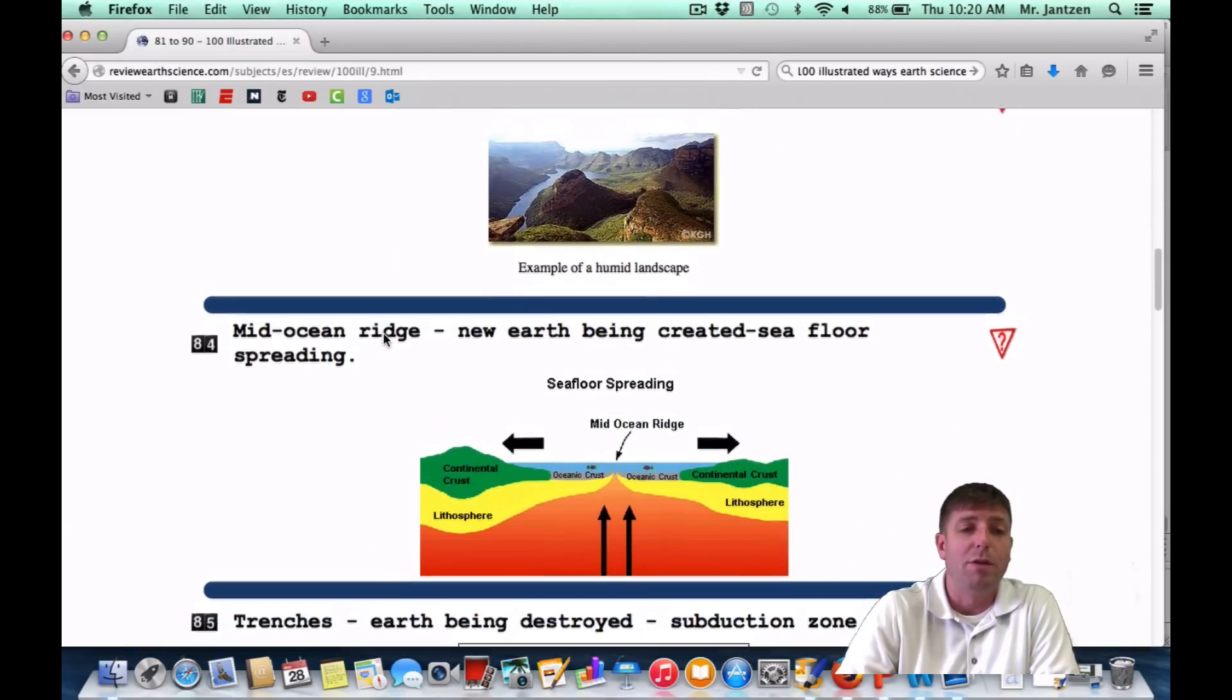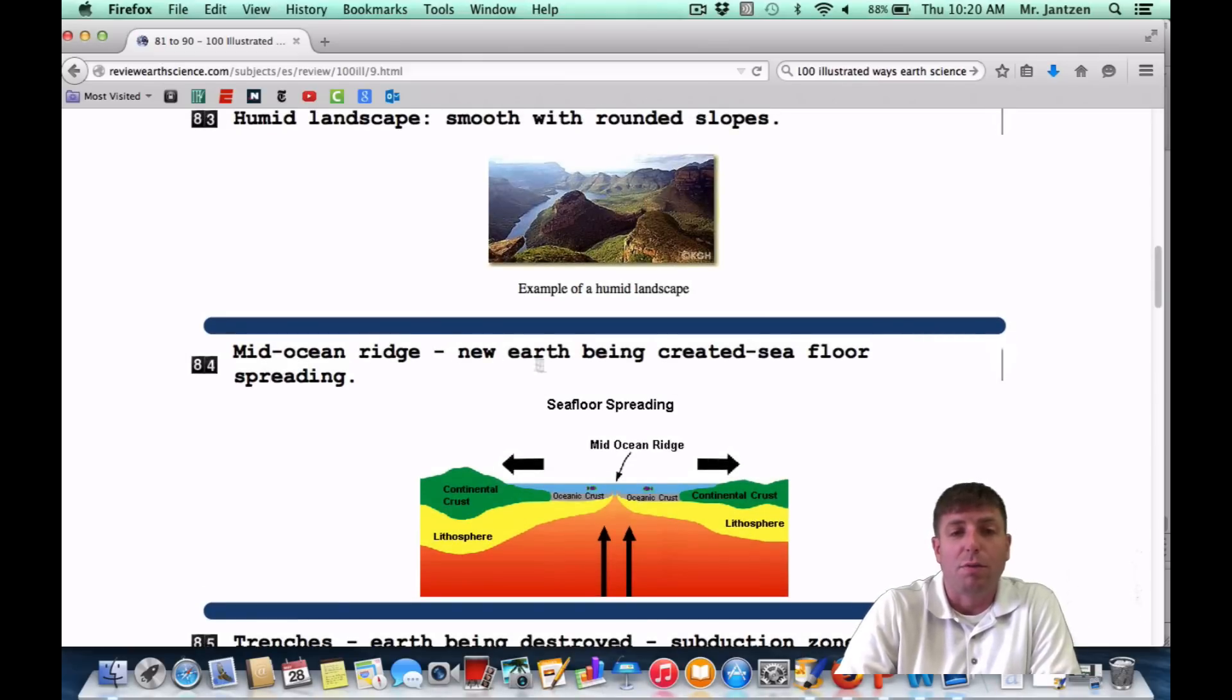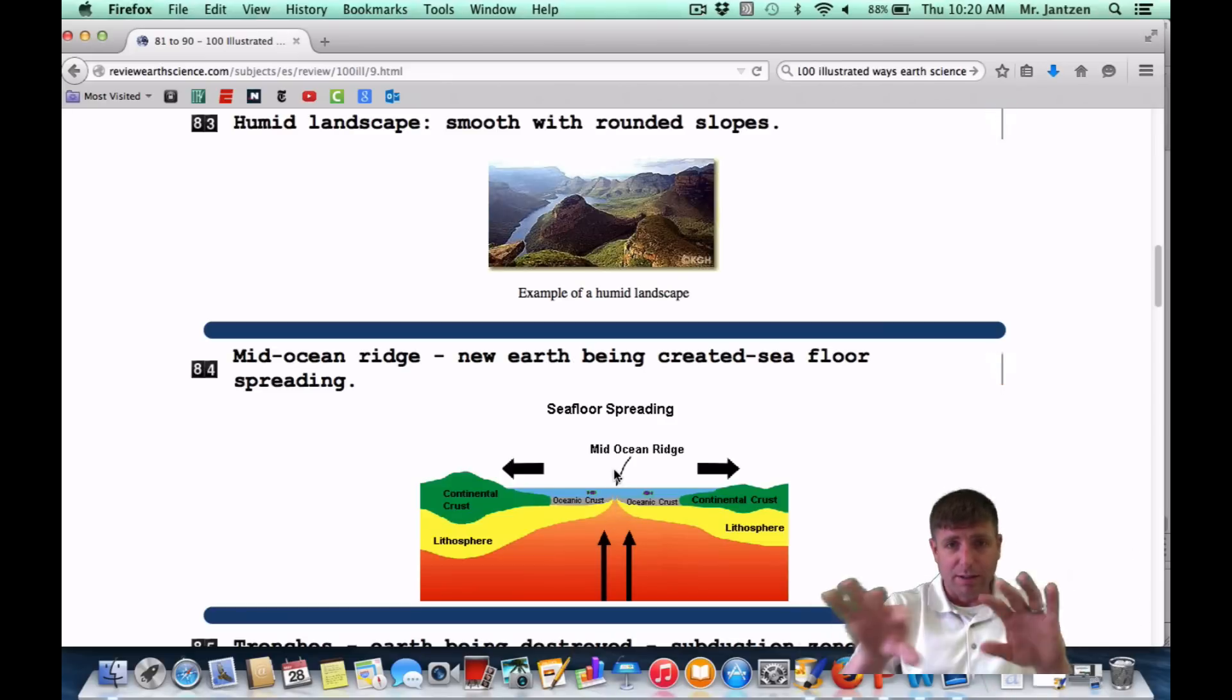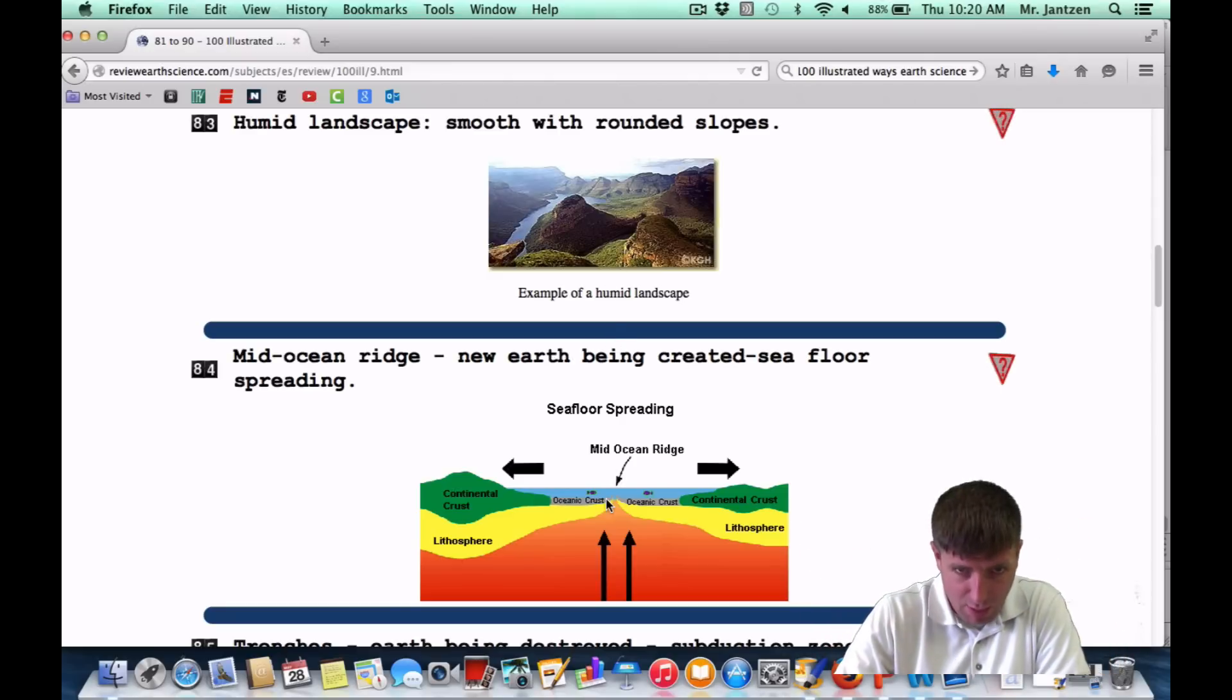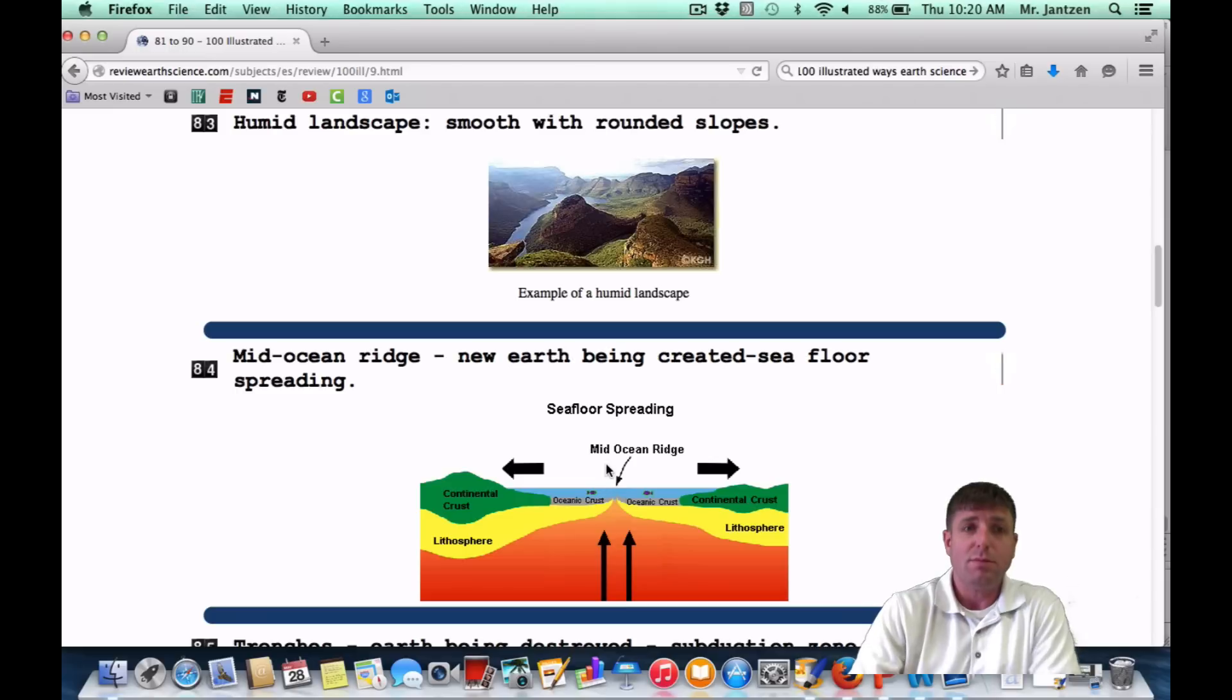Number 84: mid-ocean ridge, where new earth is being created, seafloor spreading occurs. So once again, it's a divergent boundary. You have the crust coming up, separating, pushing out the two different sides. And new crust is being created right in the middle here, right at this ridge. So mid-ocean ridge, you don't have to memorize. Once again, that's going to be in your reference tables.